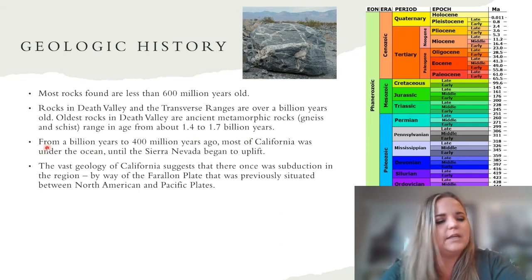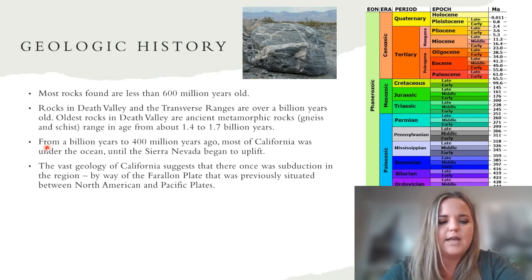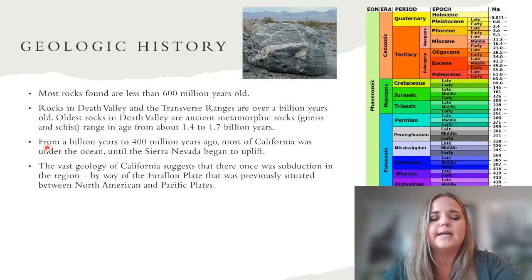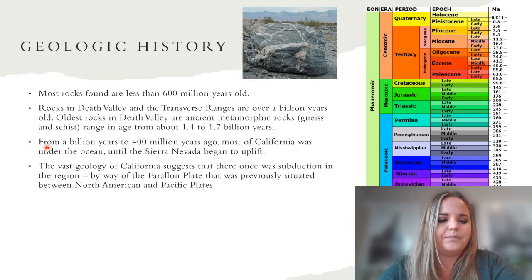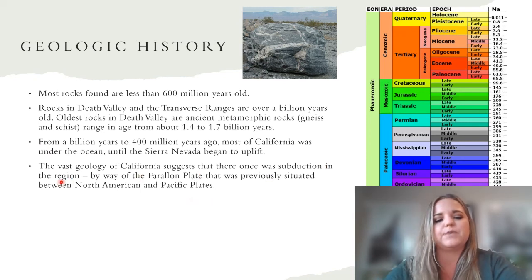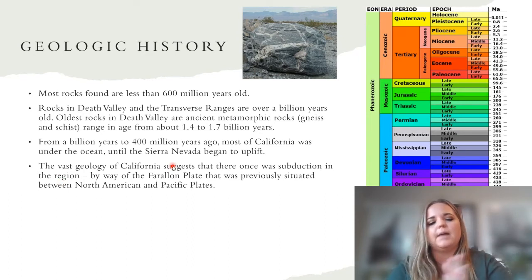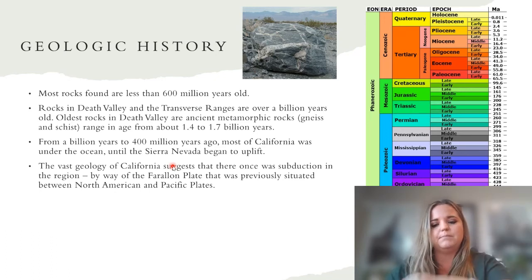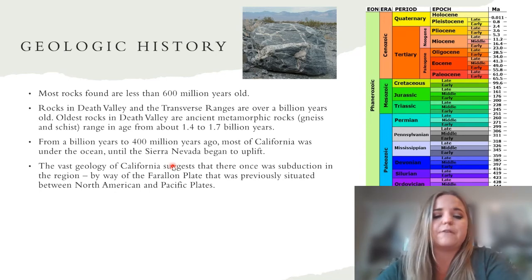From about a billion years ago to 400 million years ago, most of California was under the ocean. This is when the Sierra Nevada started to uplift and we actually see some landscape of California emerge. The vast geology of California suggests there was one subduction zone in the region, with the Farallon Plate situated between the North American and Pacific Plates. Now we see the Transform Plate Boundary, which brought Baja California further north.